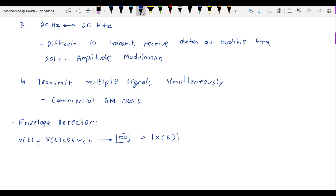Now, we talked about AM radio as the reason why envelope detector would be useful. Another application of envelope detection is what's known as frequency shift keying.